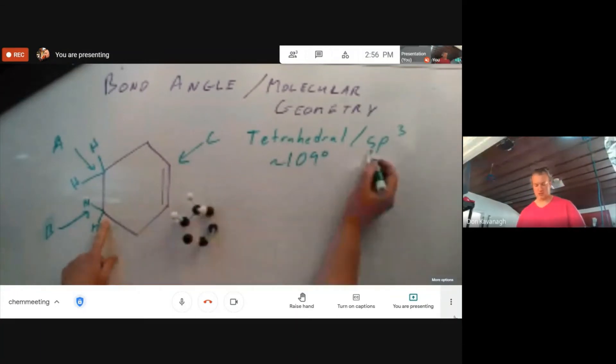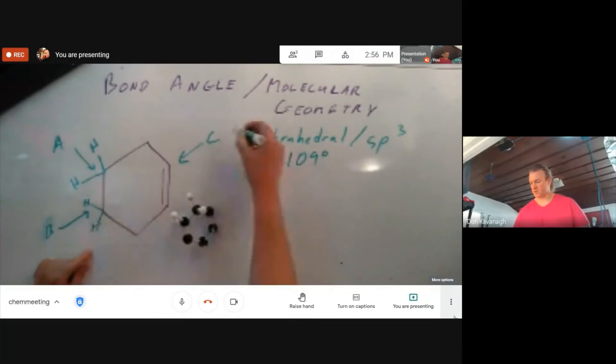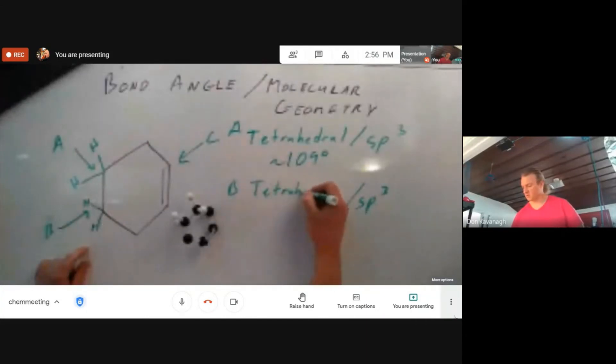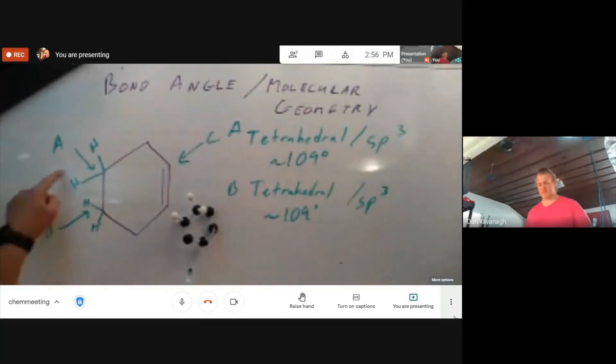Therefore, it is tetrahedral, and it also has about a 109 degree bond angle. Carbons A and B are identical in their bond angle.